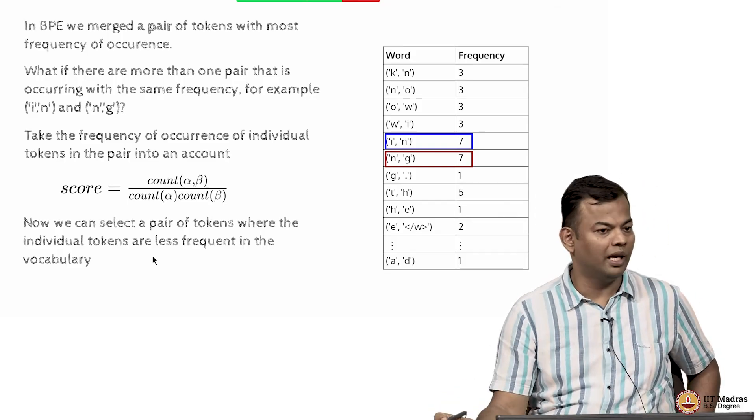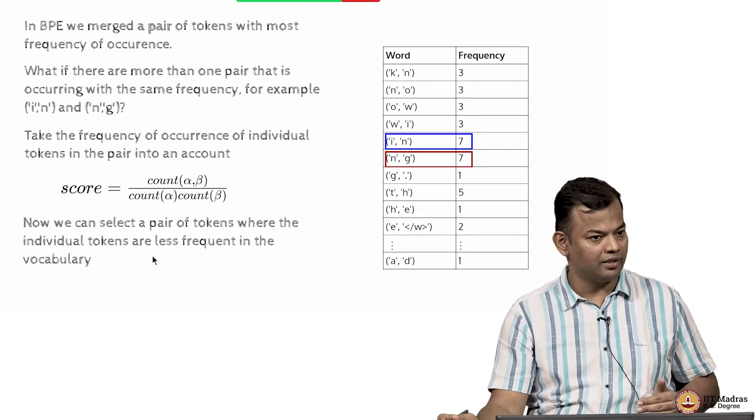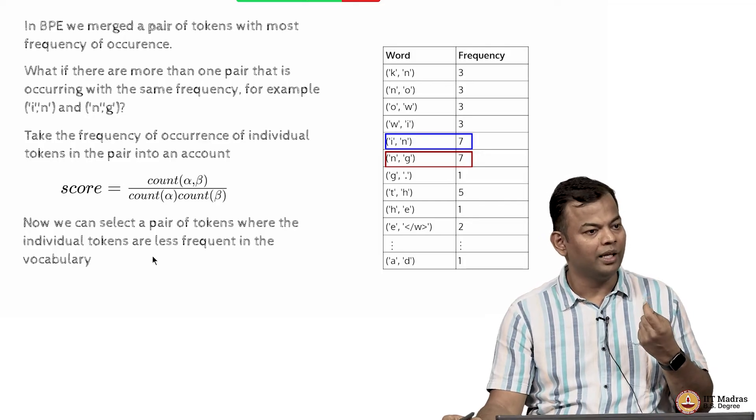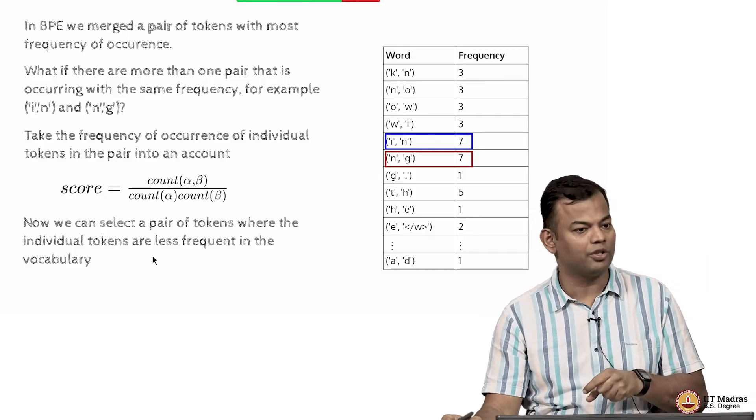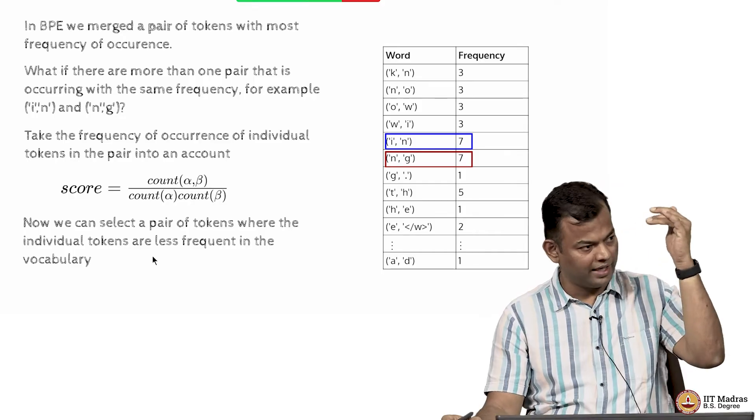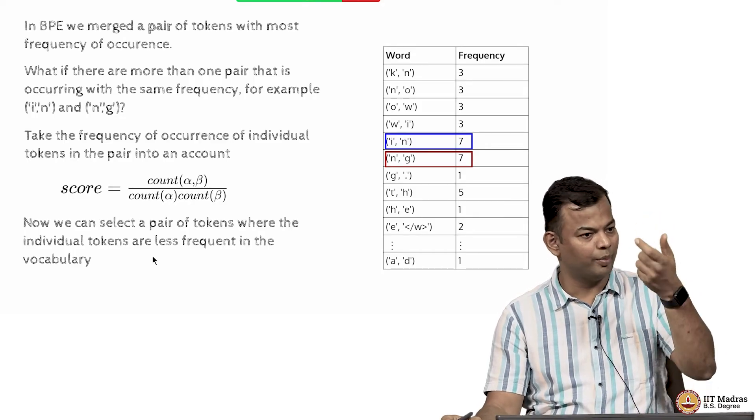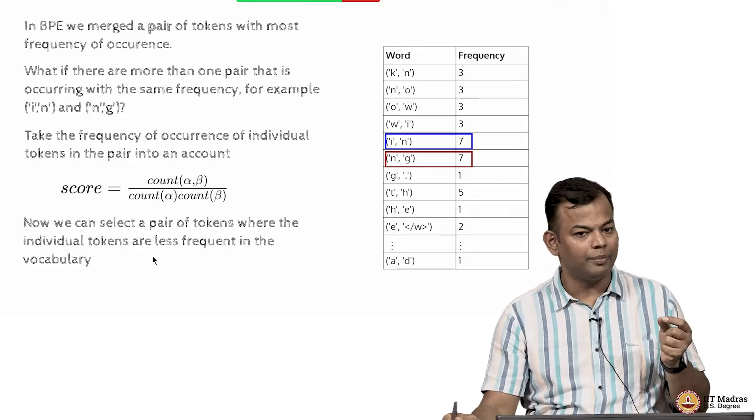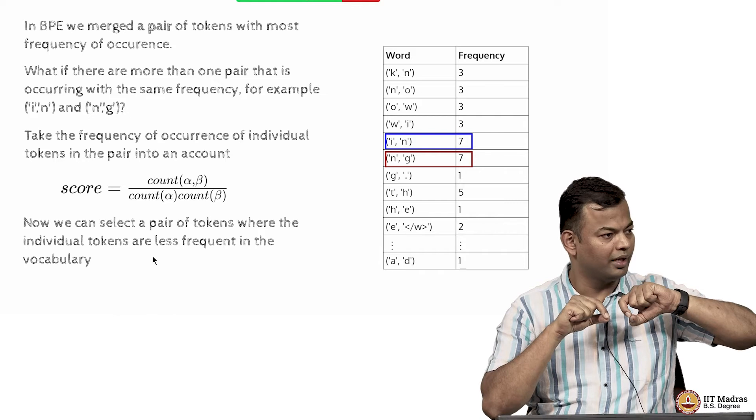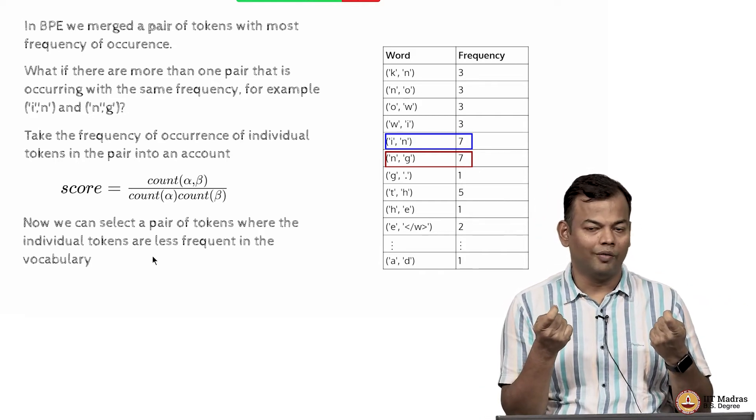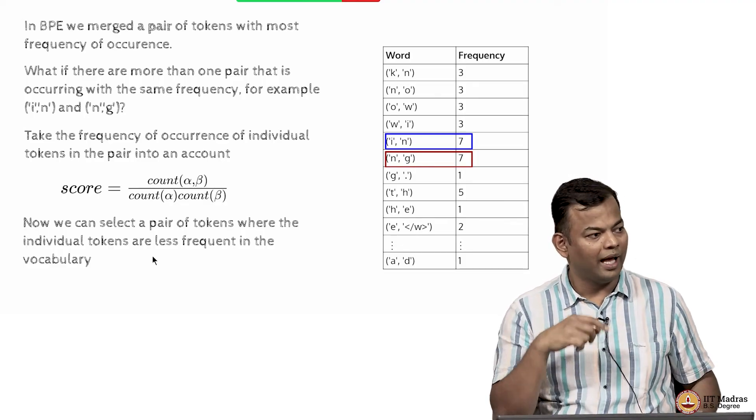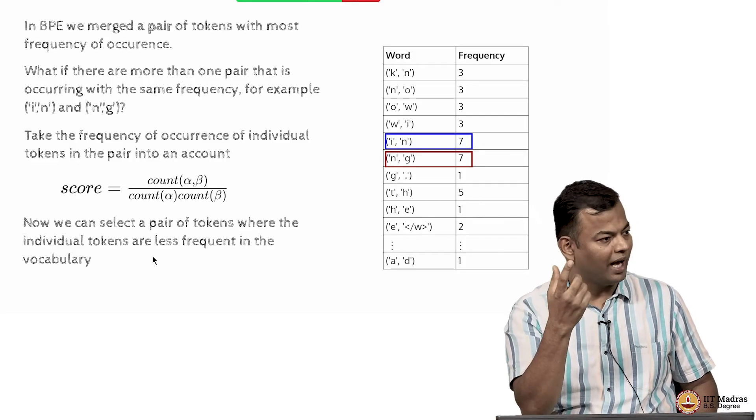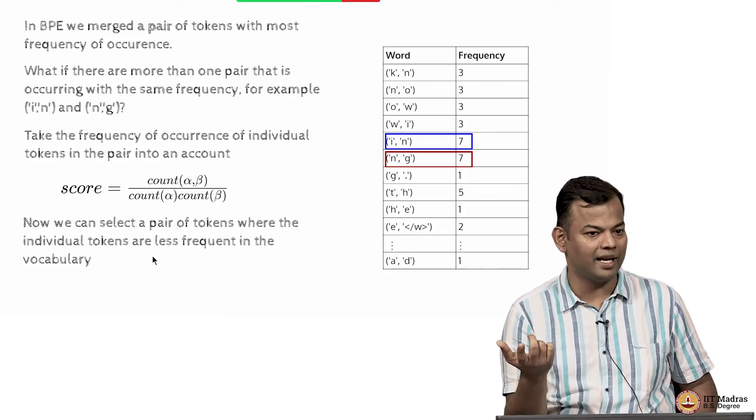When would this score be high? When the denominator is less, that means the individual tokens that you are trying to merge did not appear frequently. That means these two tokens typically appear when they are merged together. If these tokens are independently appearing fewer times and most of the times when they are appearing it is because of this merged token, then the score would be high and it makes more case for merging this as opposed to the other candidates.